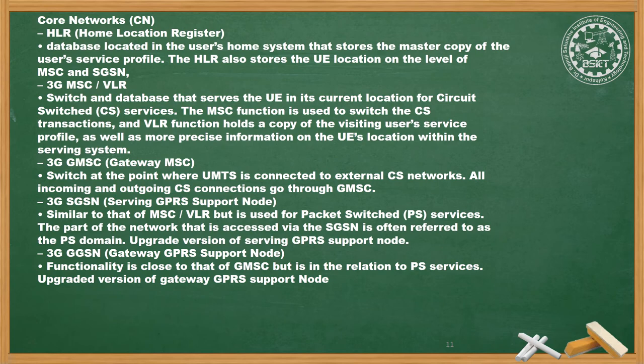The core network has an HLR — Home Location Register — a database in the user's home system that stores the master copy of the user's service profile. The HLR also stores the UE location at the level of MSC and SGSN. The 3G MSC/VLR is a switch and database that services the UE in its current location for circuit-switched services. The MSC function switches CS transactions, and the VLR holds a copy of visiting user's service profile as well as more precise UE location information within the serving system.